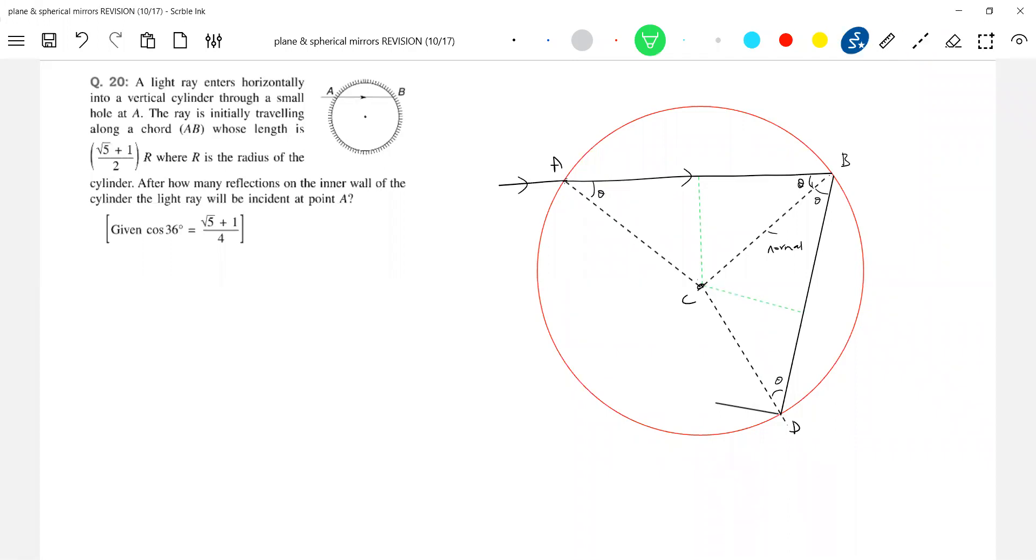These two angles, shall I write alpha 1, alpha 2 or alpha, alpha? Alpha each, both. Trace out some mathematics. Theta is 36 degrees. Theta will be 36 degrees. Length of the chord given, so here we'll write it P.